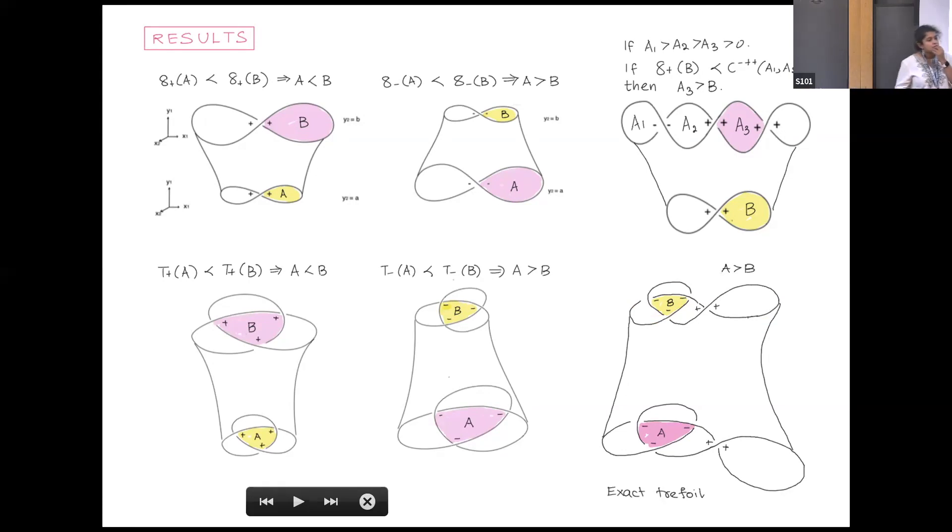The fact that all the inequalities are strict means that essentially none of the examples here, none of the knots that you have here can go to itself. If it has to go to itself, you have to sort of have that this height here is zero, which means you don't have something which is a circle sitting inside x1, x2 or something. It's a very degenerate case. You sort of just have to have something sitting in x1, x2 and you take a cylinder. Otherwise, you'll always have to have strict inequalities.